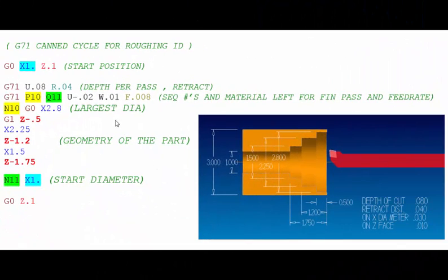Here we're looking at the G71 canned cycle used for the roughing operation in our previous illustration to machine these 3 bores in the end of the part. Let's start at the top of this program where we are positioning the tool in front of the part about a hundred thousandths in front of it at a safe clearance distance and even with the 1 inch ID that was drilled.